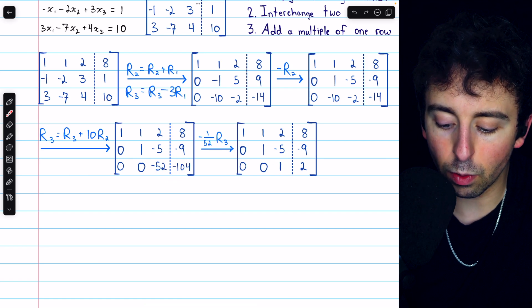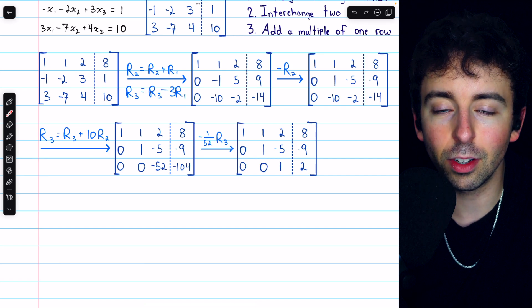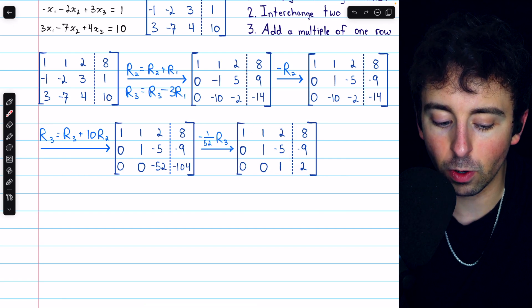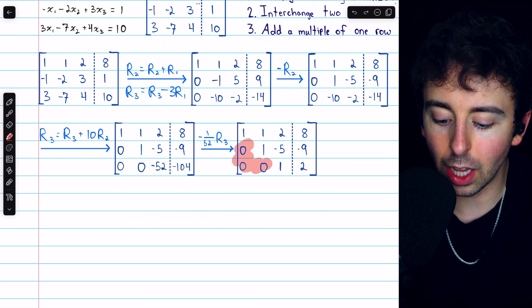Now we have positive 1s on the diagonal of the coefficient part of the matrix, and we have 0s below them.